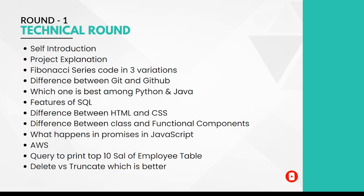The next question was what exactly happens with promises in JavaScript. Then they asked what is the use of AWS. After that, they gave me a query to solve — to print the top 10 salaries from an employee table in SQL. They also asked the difference between DELETE and TRUNCATE and which one is better to use.